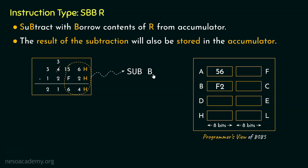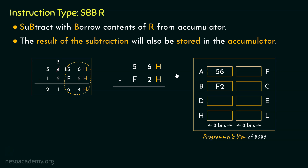Executing SUBB, we perform the operation 56 minus F2. As told in the previous session, subtraction is not performed directly in the 8085 — instead, addition is performed after converting the subtrahend into 2's complement form. Since we are using hexadecimal notation, we convert to 16's complement. The least significant hex digit is subtracted from 10: 10 minus 2 = E. The most significant digit is subtracted from F: F minus F = 0. So the 16's complement of F2 is 0E.